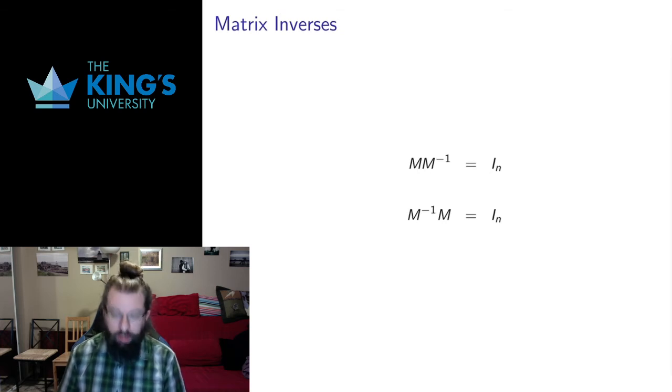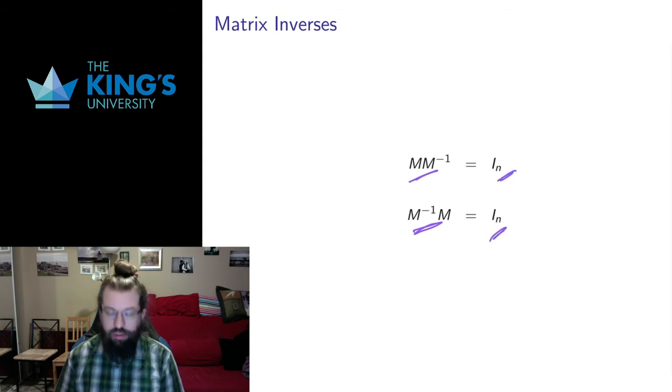And that's what's written on this slide. The inverse M inverse to a matrix M is some matrix such that when I do the matrix multiplication on either side, I get the identity matrix in the right dimension.